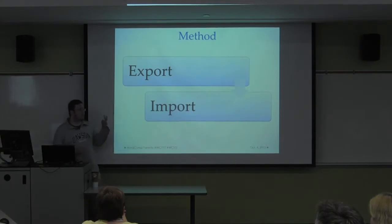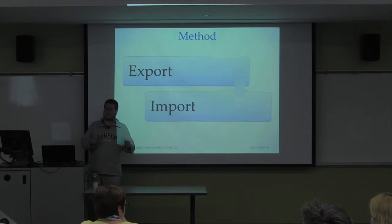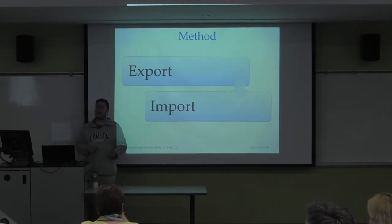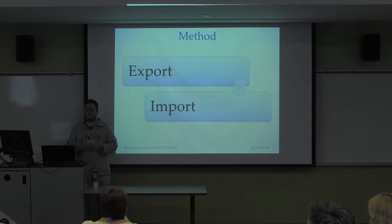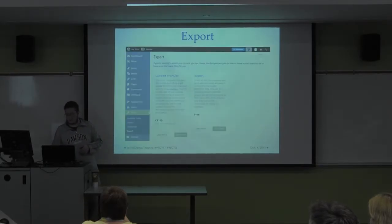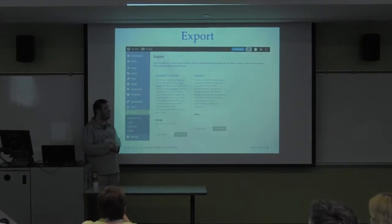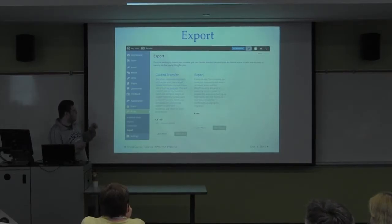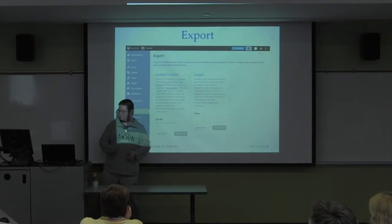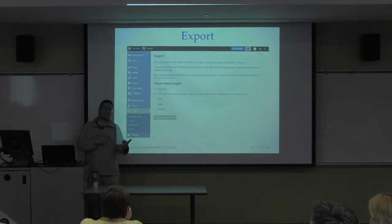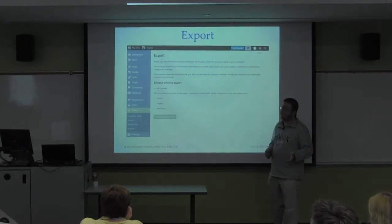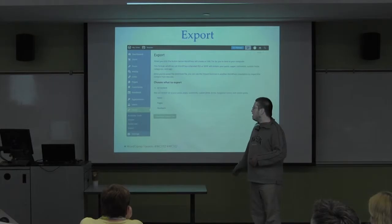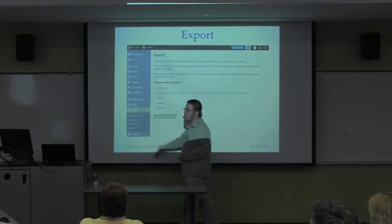There are two terms we'll use in migrating: exporting and importing. Exporting means downloading information from a site; importing means uploading it to another site. In WordPress.com, go to Tools then Export, click Start Export, and it will ask what content you want — all content, just posts, just pages, or just feedback.